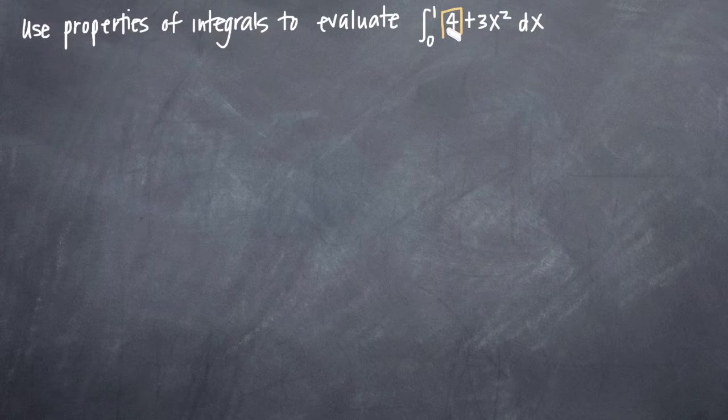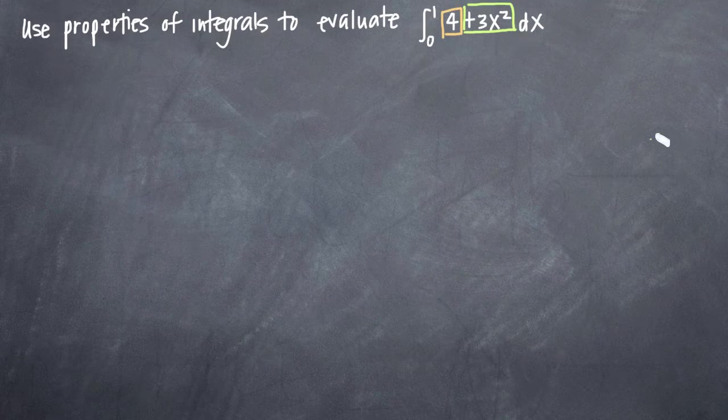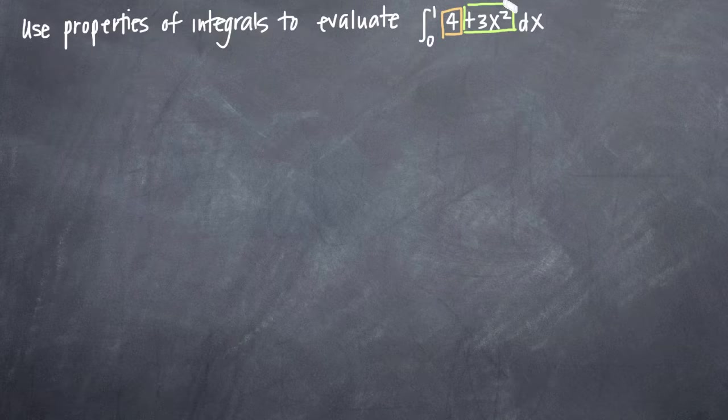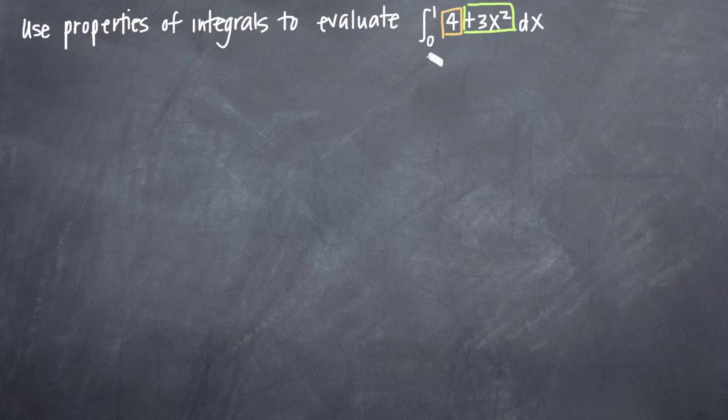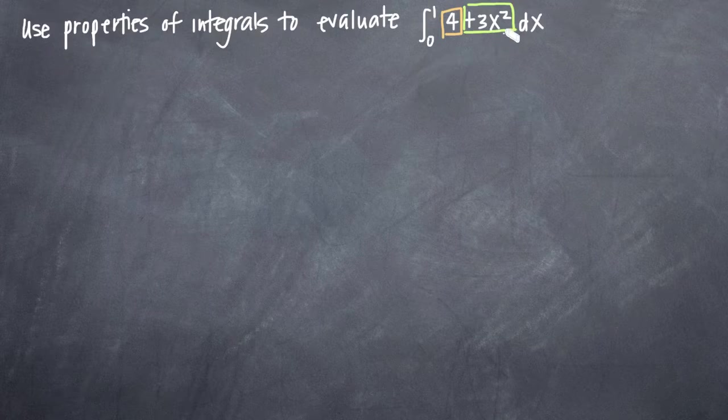one function which is 4, and the other function which is 3x squared. Because they are added together—if they were multiplied or divided one by the other, we wouldn't be able to do this, but because they're added together, and if they were subtracted from one another we could do the same thing—